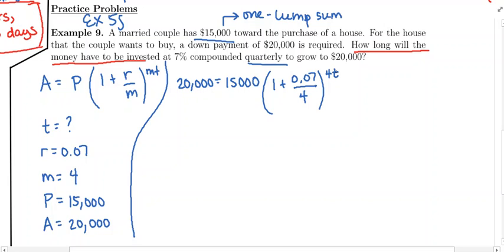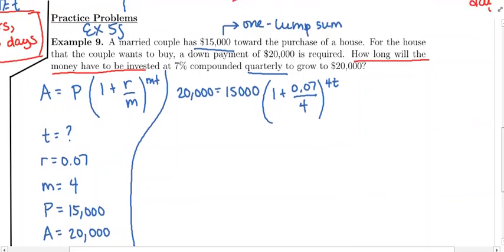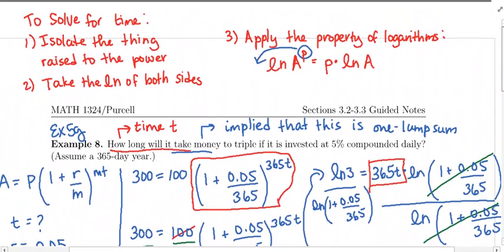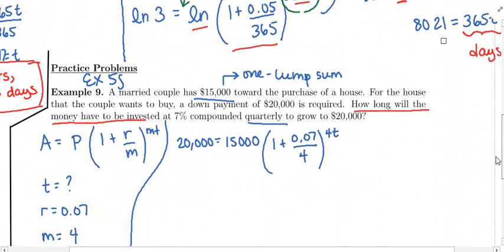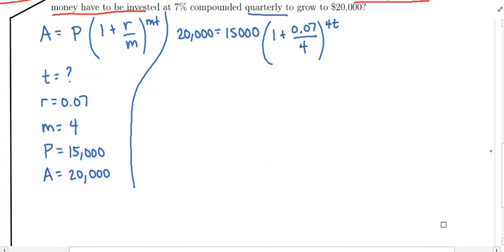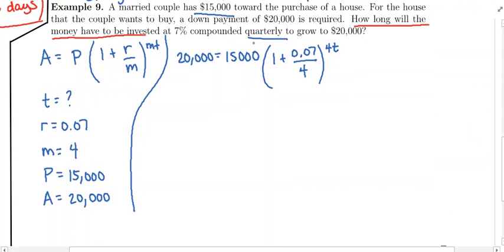You're going to have to eventually use the natural logarithm to get T out of the power. At the top of the notes I rewrote the steps needed to solve for time. Step one: we're going to isolate the thing raised to the power. The quantity in parentheses is what's being raised to the power, and fifteen thousand is just hanging out front — it's multiplied by fifteen thousand. So the first thing you want to do is divide both sides by fifteen thousand.